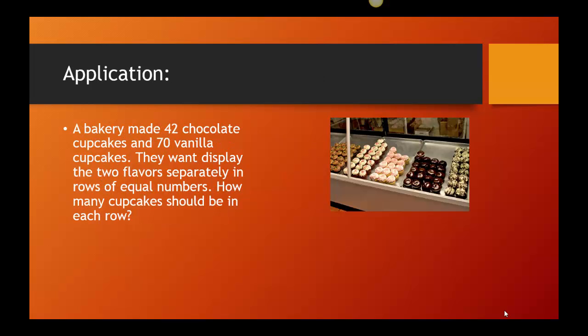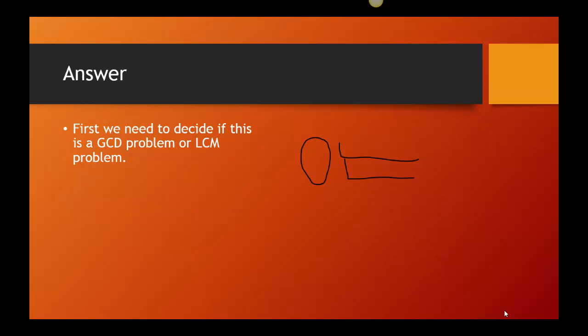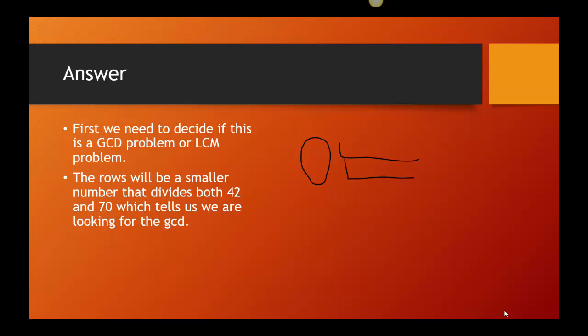So let's look at a few problems. Let's start with this one. A bakery made 42 chocolate cupcakes and 70 vanilla cupcakes. They want to display the two flavors separately in rows in equal numbers. How many cupcakes should be in each row? So the first thing we need to decide is, is this a GCD problem or is this an LCM problem? Well, since we are trying to break down our 42 and our 70 into smaller numbers, we should know to use the GCD.